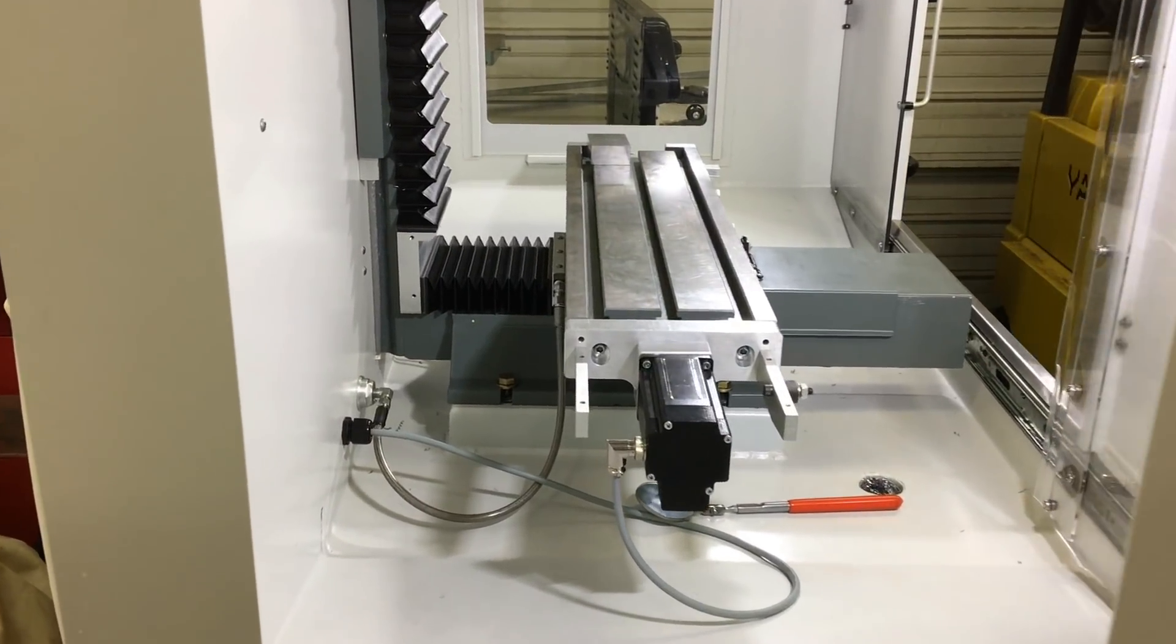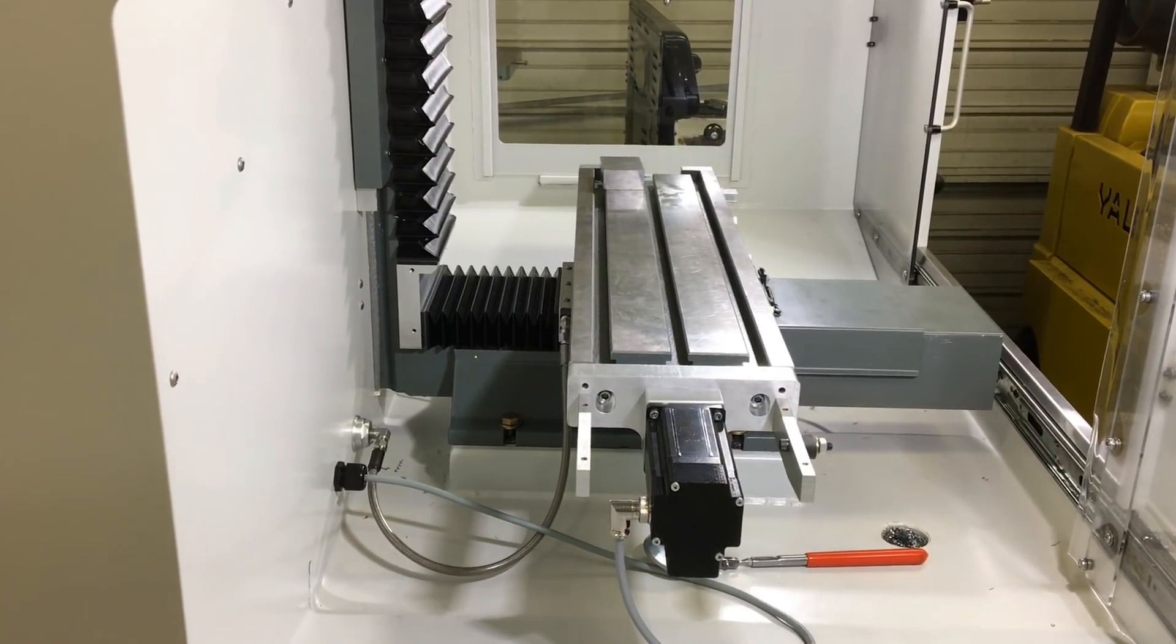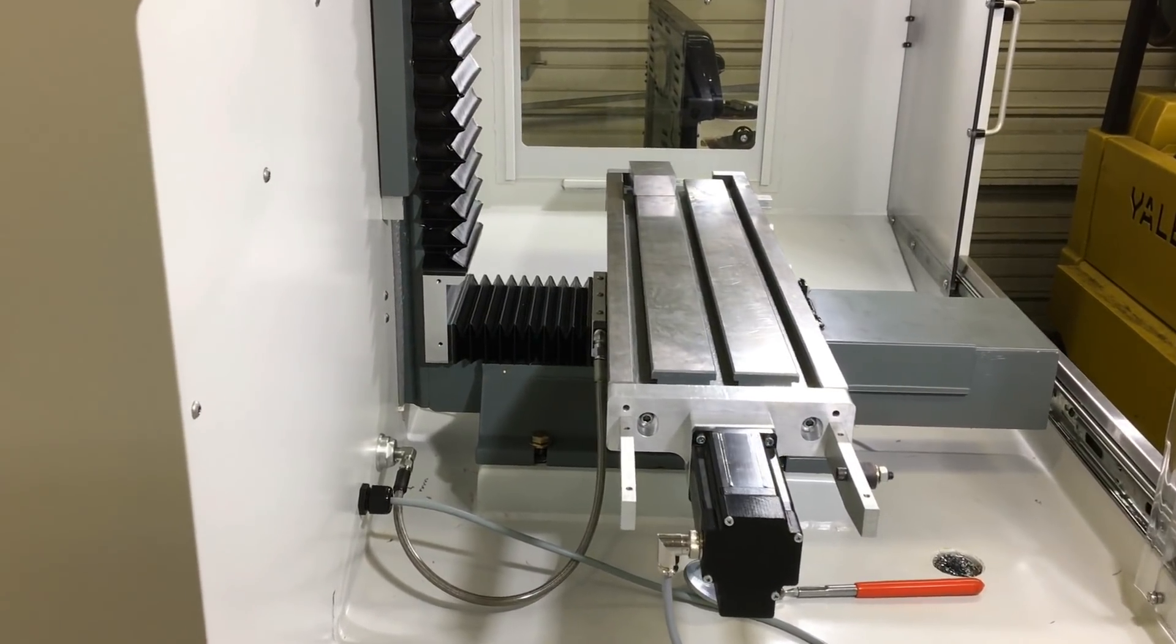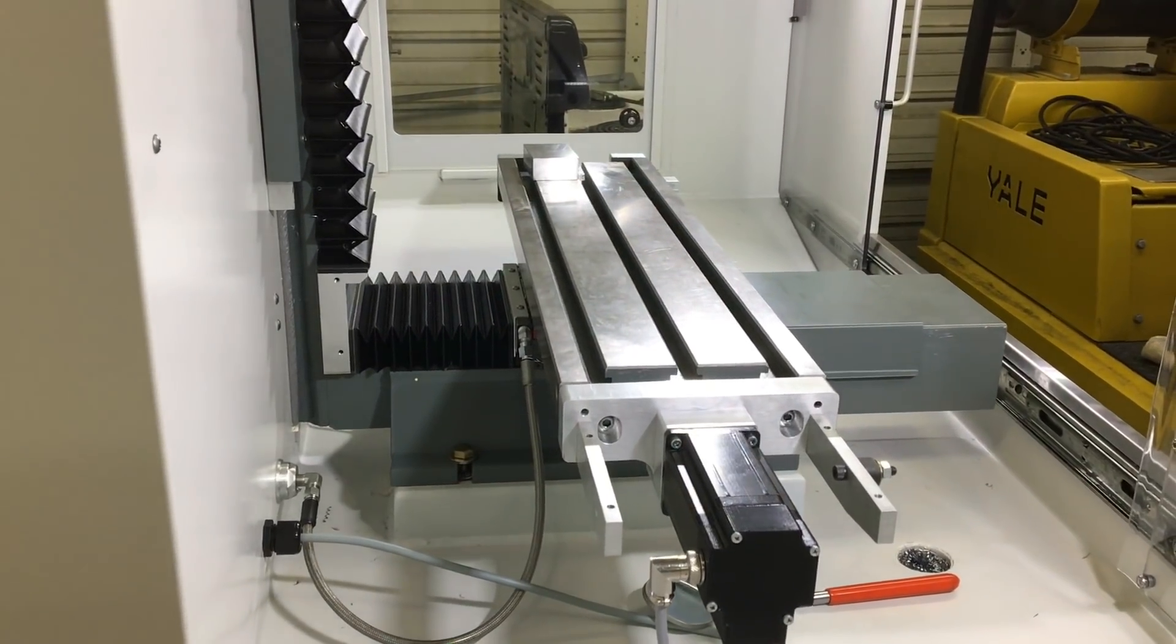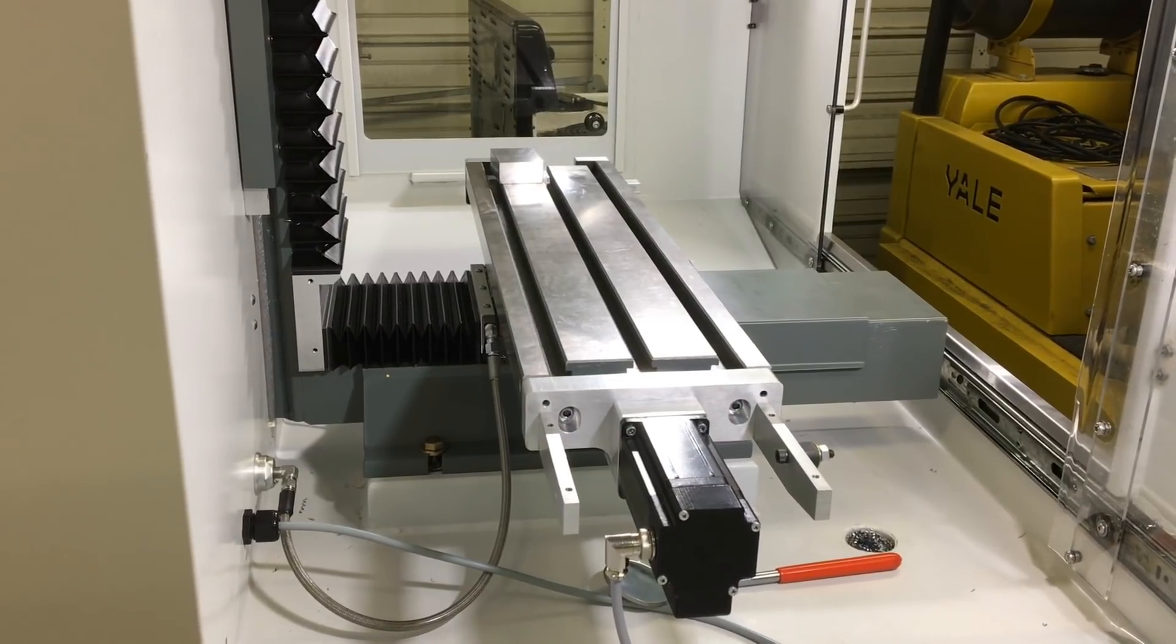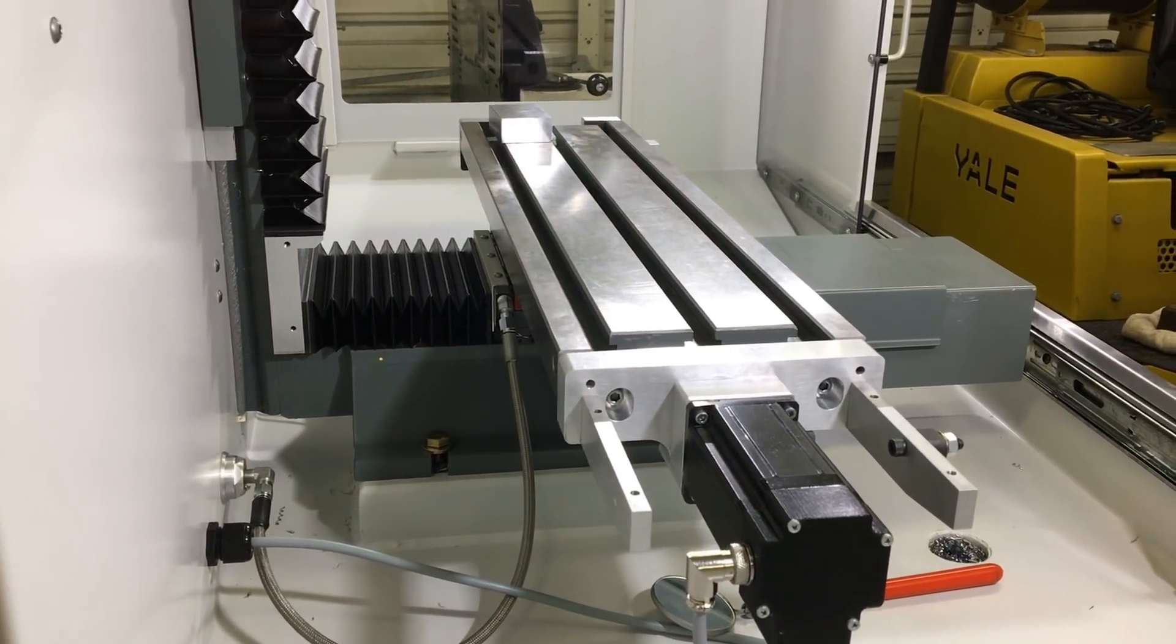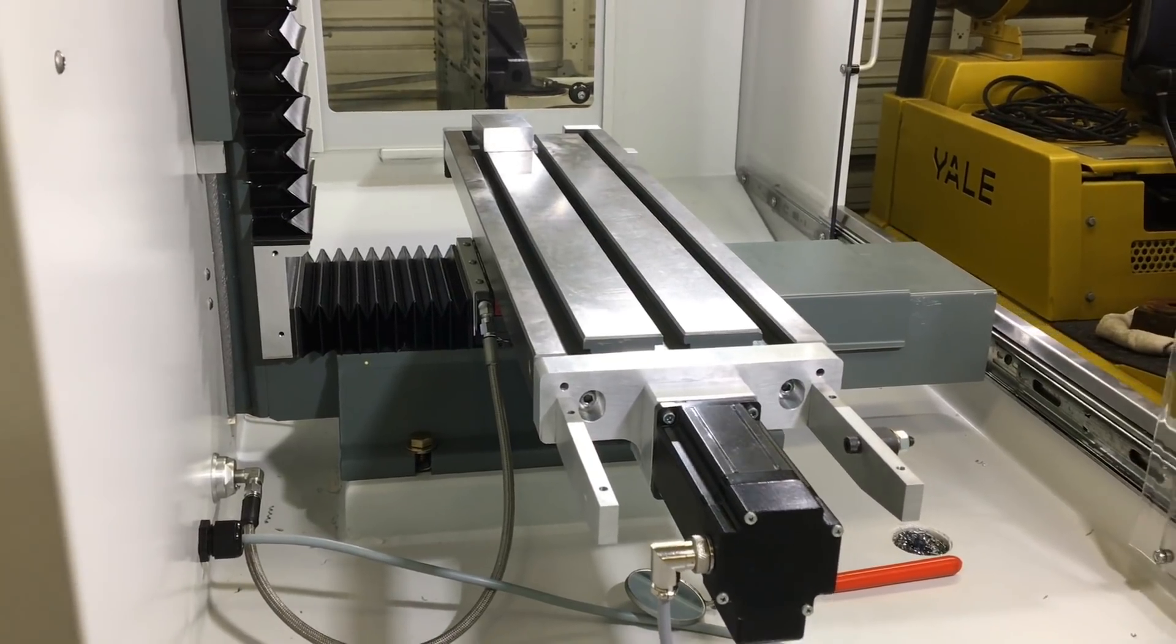Still a couple things to button up. Of course, I've got to put the sheet metal back on the table and I'm going to add a seal or something to prevent all of the chips and stuff filling in between those back linear rail cars on the saddle.